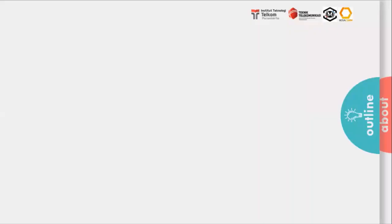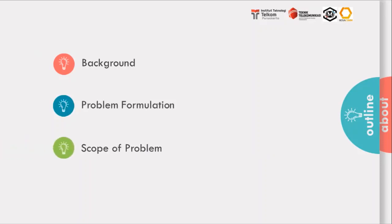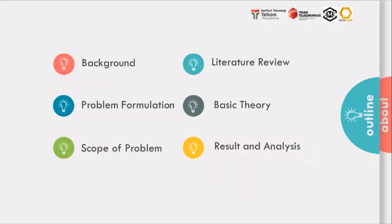There are some sections I will explain in this presentation. First, the background contains the reasons for this research. Second, the problem formulation defines the problem specifically. Third, the scope of problem contains the limitation of the problem. Fourth, literature review. Fifth, basic theory, explaining the theoretical background of this research. Sixth, result and analysis, explaining the flow in completing this research, description of the planning area, formula with calculation results, and the simulation result. And last, there are conclusion, recommendation, and my references.